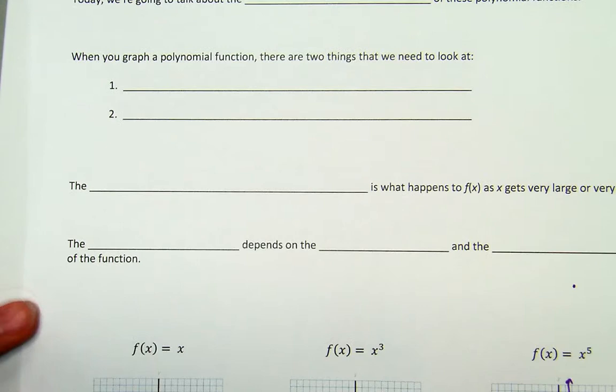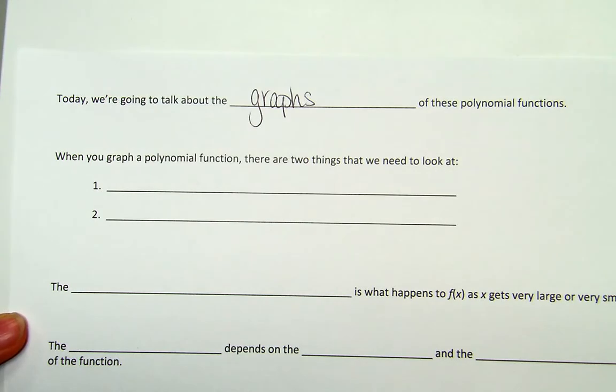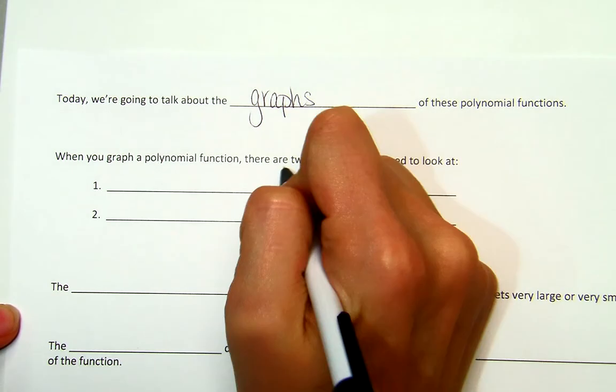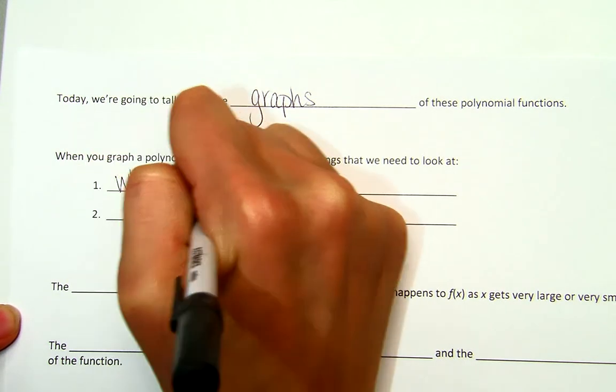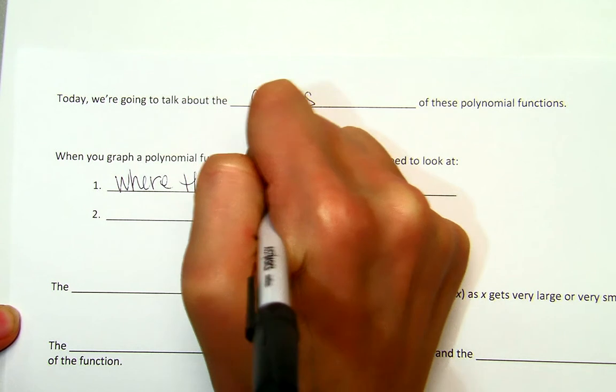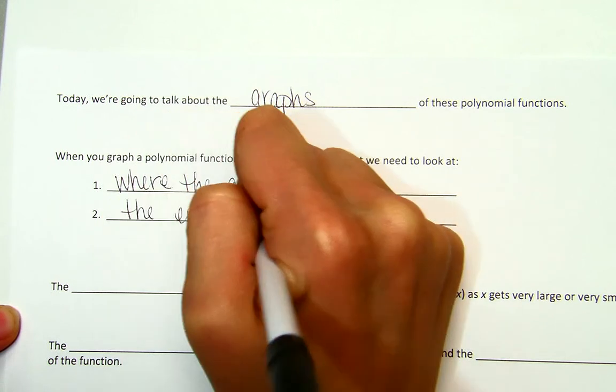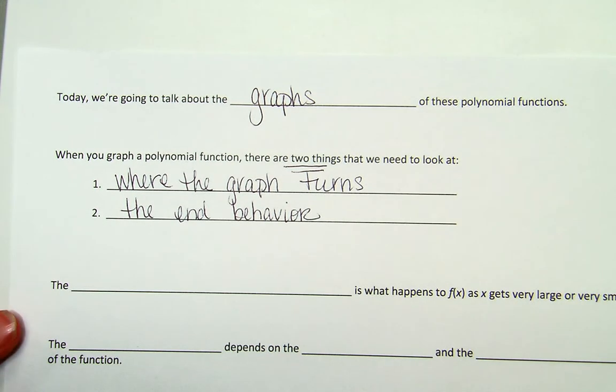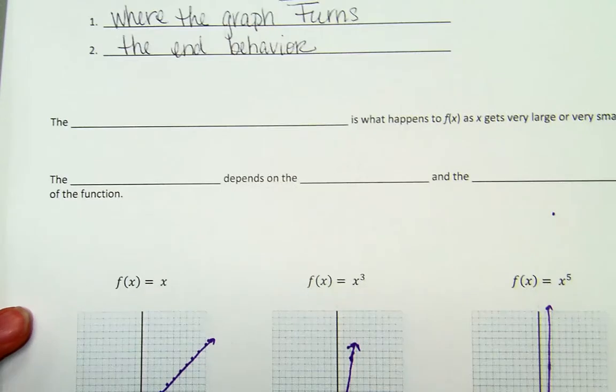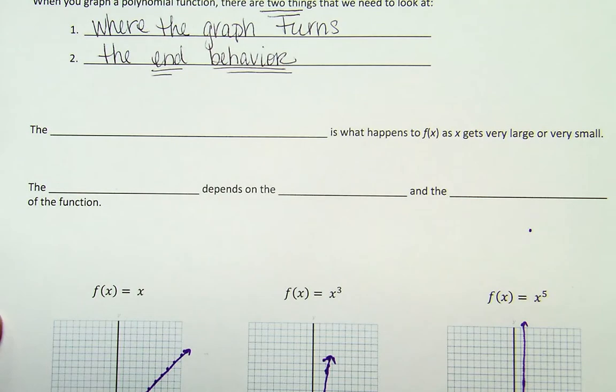So moving forward, today we're going to actually talk about the graphs of these polynomial functions. We're going to dive in a little bit and introduce what the graphs look like. And when you graph a polynomial function, there's really two things that we need to look at. The first is where your graph turns. And the next is called the end behavior.